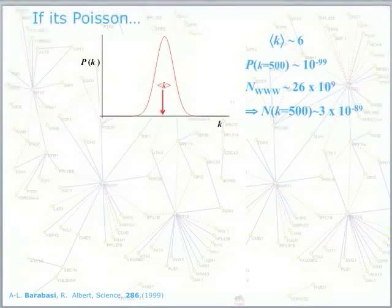If we ask what the probability is, given that we think it's described by a Poisson distribution or the normal distribution with an average of 6, if we ask what the probability of getting a site with 500 links in it is, then it turns out to be, to all intents and purposes, 0.